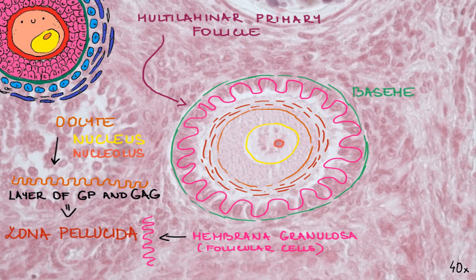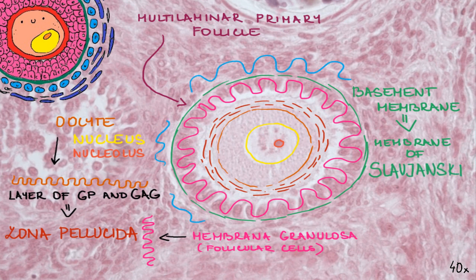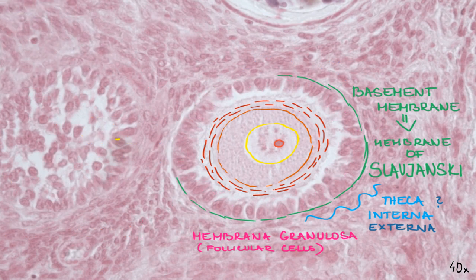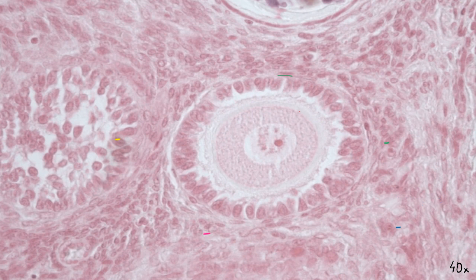The basement membrane located under follicular cells is very well developed. As soon as the follicle reaches the multilaminar stage, we call it the membrane of Slavyansky. Loose connective tissue around the follicle starts differentiating into two layers: theca interna and theca externa. Although we can see them here, they are much better developed in the late stages of the follicle, so we'll have a look at them later.